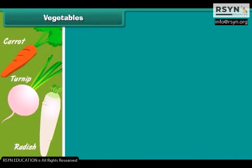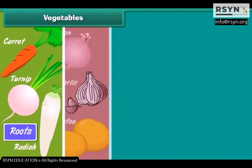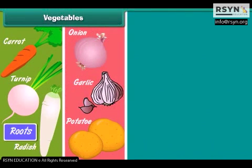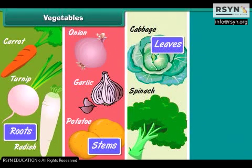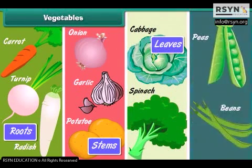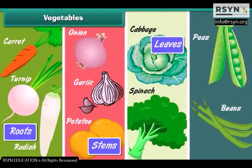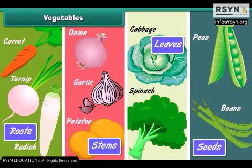Carrots, turnips and radish are roots. Potatoes, onions and garlic are stems. Spinach and cabbage are leaves. Peas and beans are seeds.